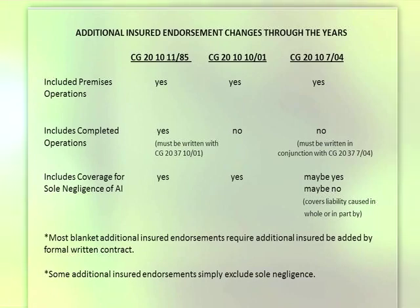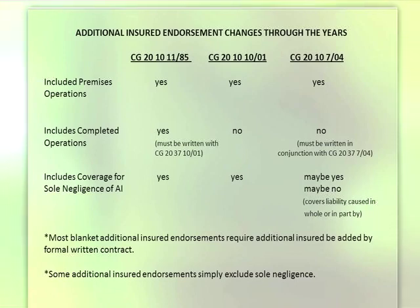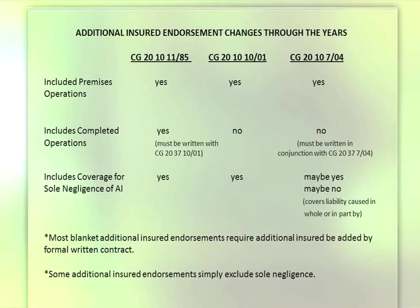The newest endorsement out is the CG 2010-704 endorsement. It includes premises operations but does not include products and completed operations — that has to be written on the 2037. I don't believe that it provides coverage for the sole negligence of the additional insured, and typically that's what the contract you're getting from the owner is requiring.